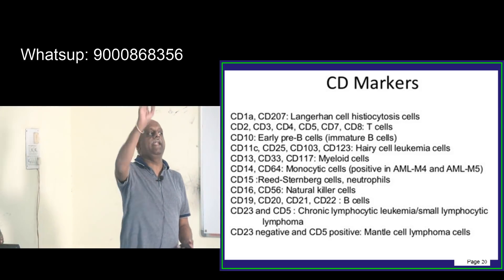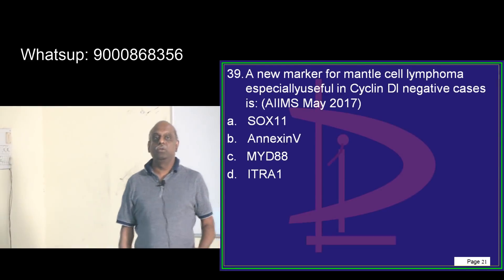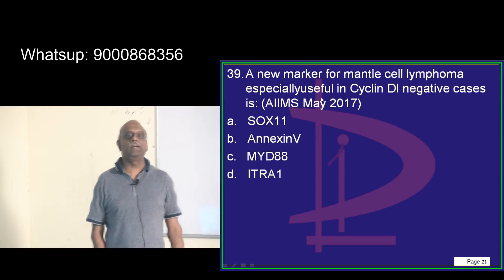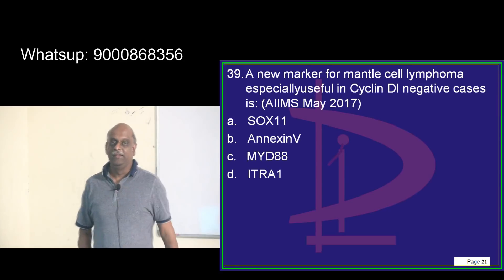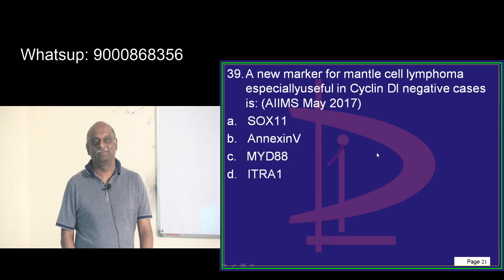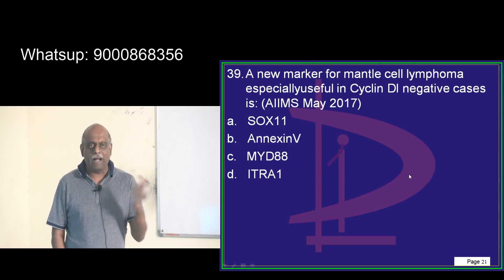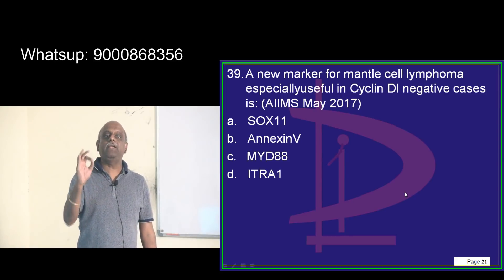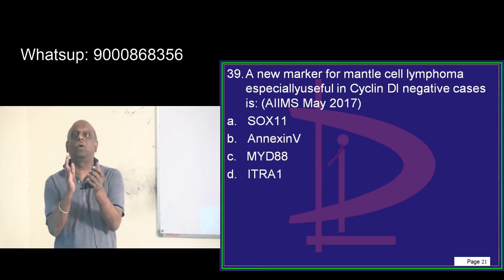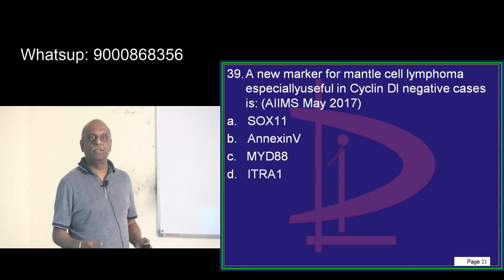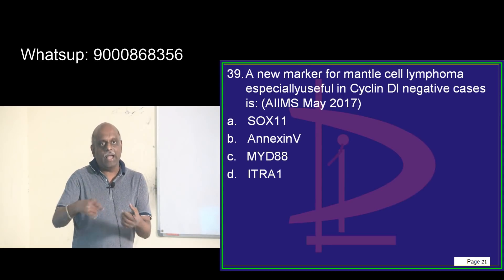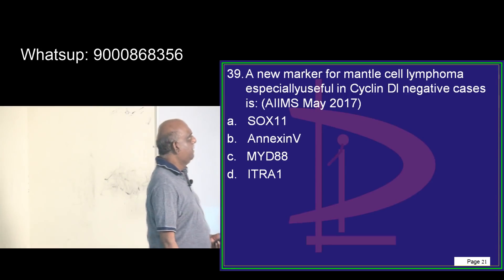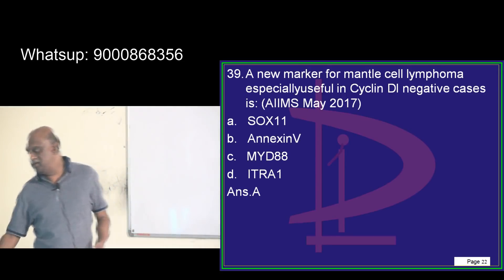Rituximab targets CD20. For mantle cell lymphoma, CD5 is positive and CD23 is negative. There is also a new marker especially useful in cyclin D1 negative cases — SOX11. First, we need to know it's cyclin D1 positive, but if that is negative, the other marker to use in mantle cell lymphoma is SOX11.